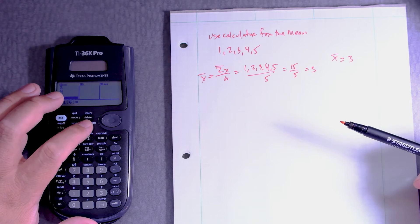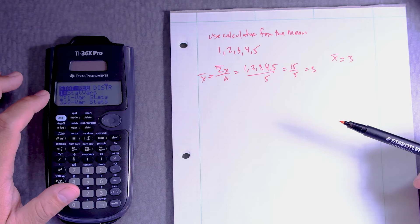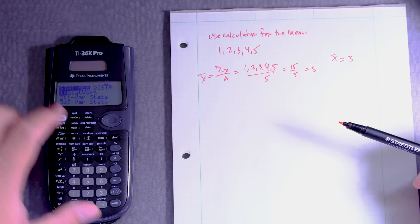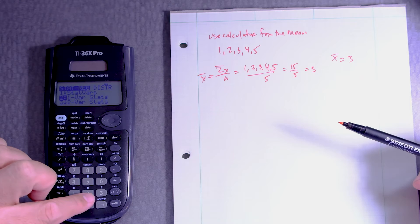So second data, and then we're going to do one variable statistics, which is number two. You can scroll down or press two.